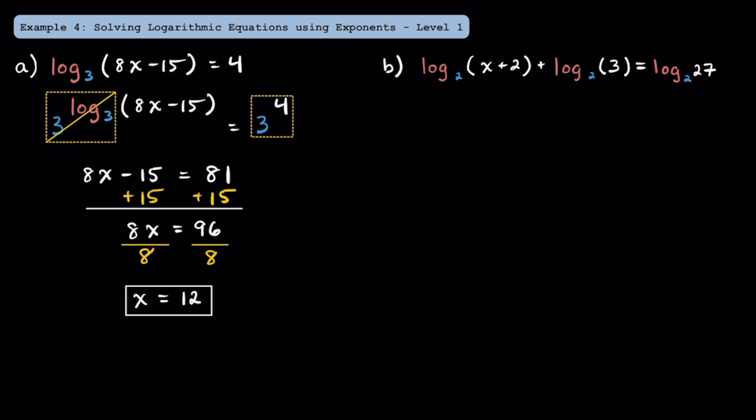Now that we have our answer, remember that you can always substitute it back into the original equation to see if it works. For logarithmic equations, it's always a good idea to plug in your solution to make sure you don't have a negative number inside the log. Since 8 times 12 is 96 and 96 minus 15 is definitely a positive number, this is going to be okay. If you happen to get a negative solution, remember it's an extraneous solution and you can cross it out.